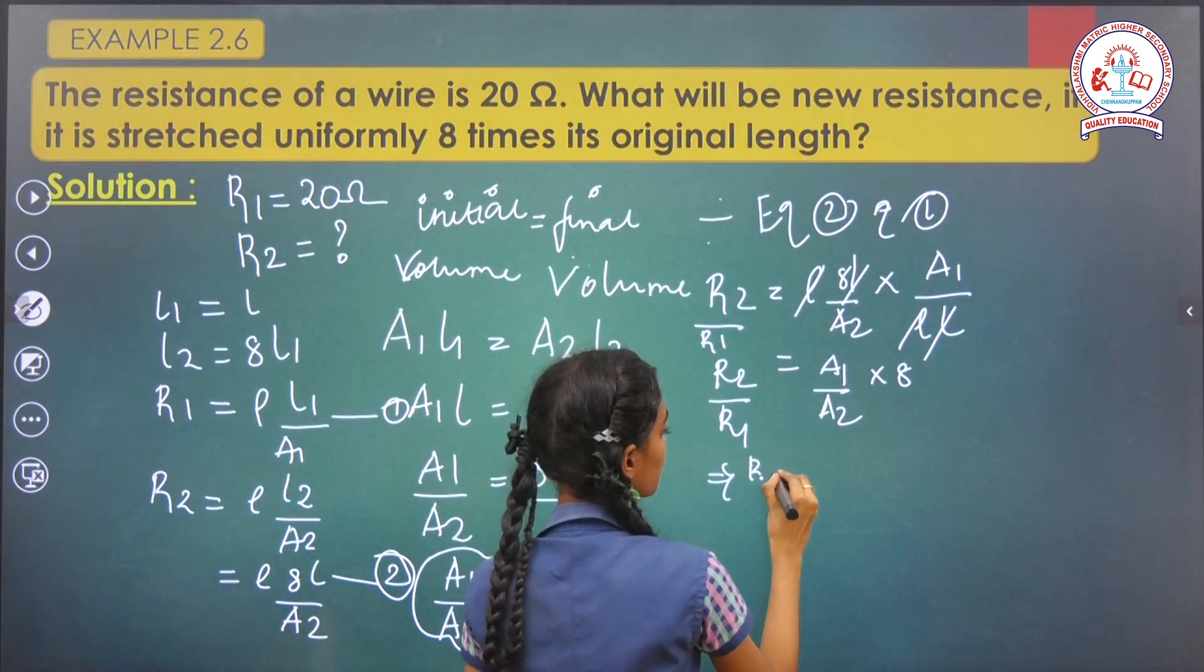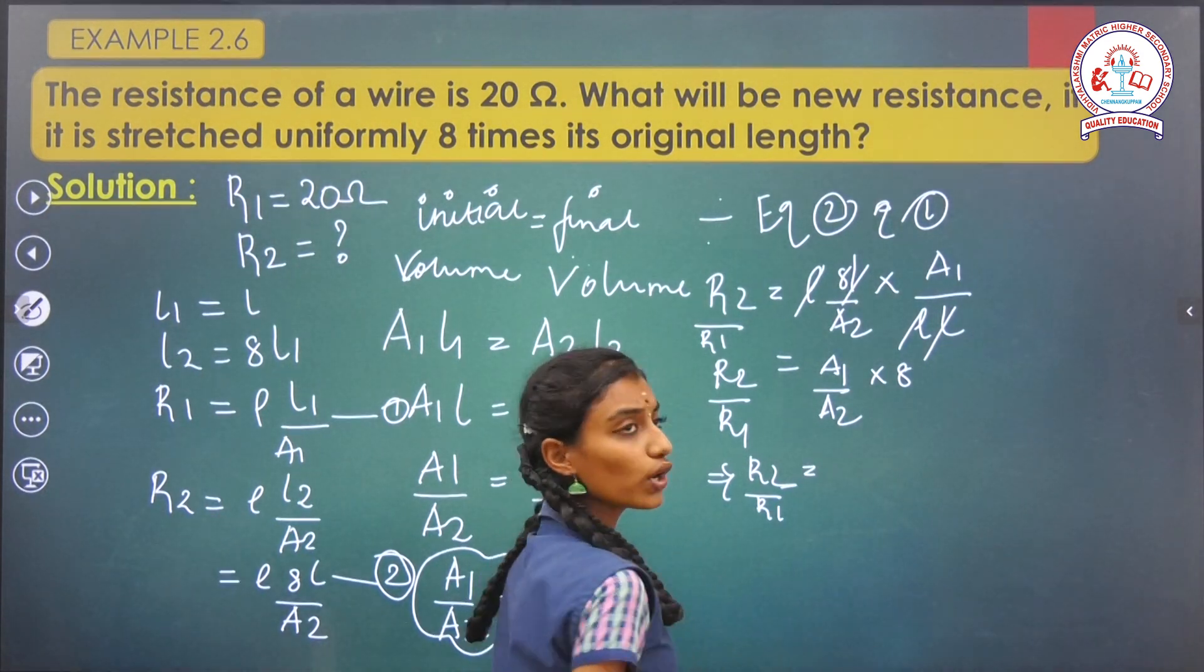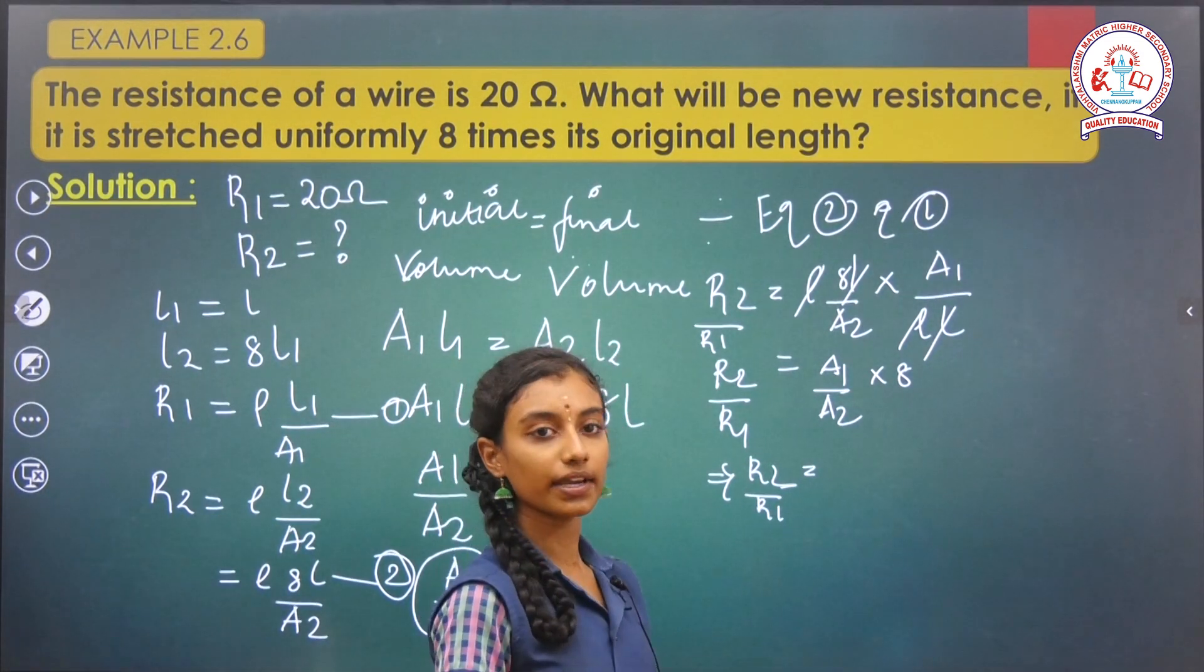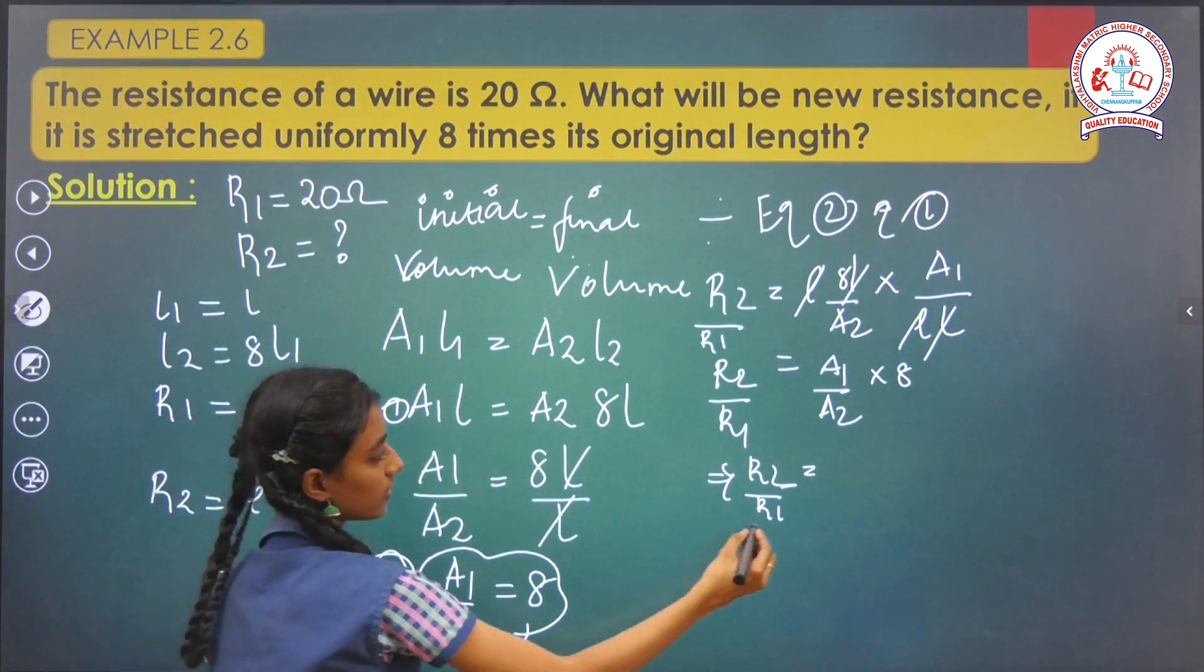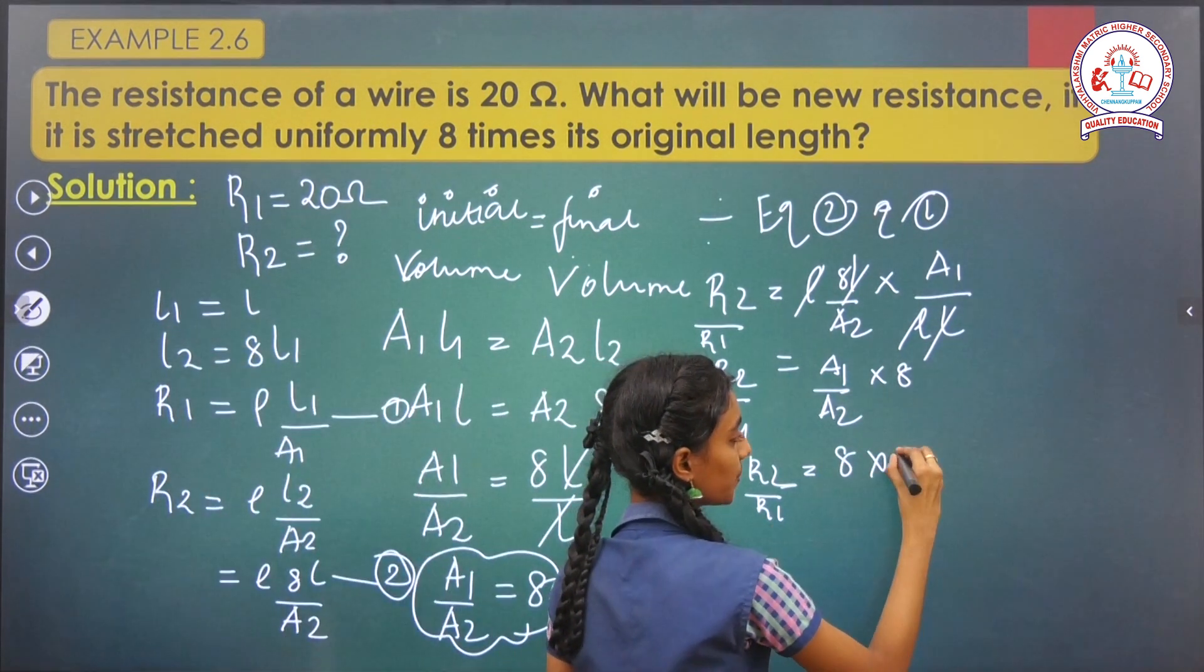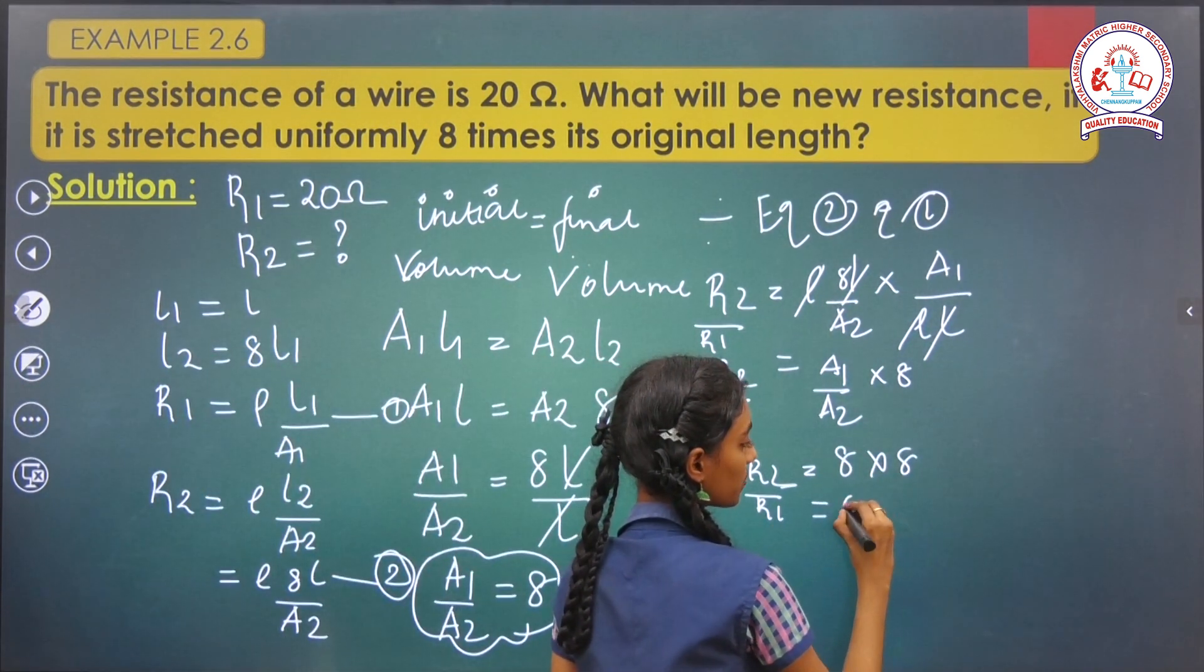R2 by R1 equals, we already know that A1 by A2 equals 8. 8 into 8, which equals 64.